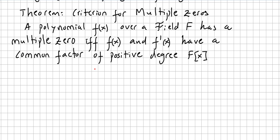Theorem: Criterion for Multiple Zeros. A polynomial f(x) over a field F has a multiple zero if and only if f(x) and f'(x) have a common factor of positive degree. If a certain value a is a zero and is also a zero of the derivative, then this zero will be a multiple zero.